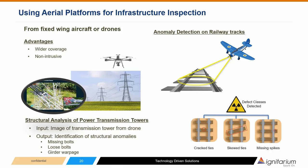An aircraft-based system could cover 400 to 500 miles per day — a 10x or more improvement in coverage — resulting in significant cost savings. We now discuss the use of aerial platforms for infrastructure analytics. These include fixed-wing aircraft and heavy-lift, high-payload-capacity UAVs. One actual use case shows Ignitarium AI software detecting defects on power transmission towers using drones, including structural anomalies like missing bolts, loose bolts, and girder warpage. Another use case shown detects anomalies on rail tracks.